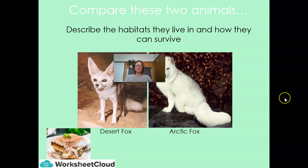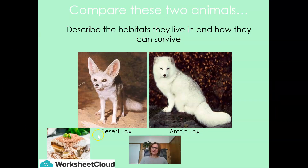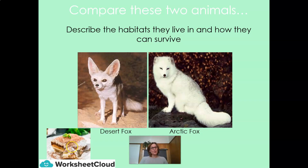If you had to describe the habitats and where these two specific animals live and how they can survive, here we have a desert fox and an arctic fox, and it's quite easy to see the differences between the two. And here's a little extra lesson: desert is spelled with one S, and dessert is spelled with two S's — because you always want two helpings of dessert!